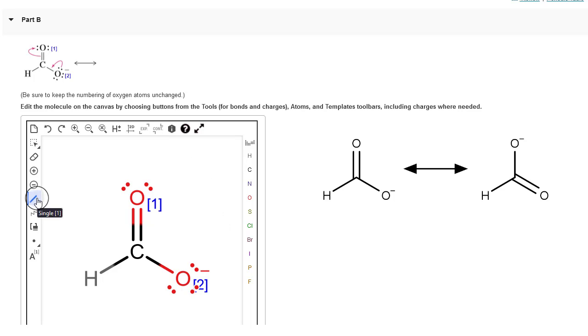So I'm going to click on this bond tool over here, click and hold down and it should come up with some options, and I'm going to choose the double bond. Then I'm going to click between carbon and oxygen 2 to form a double bond there.